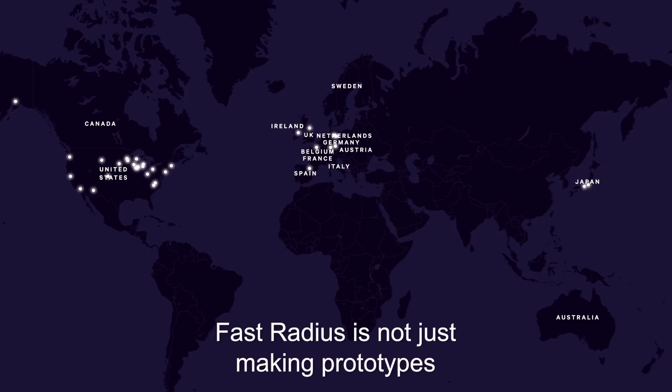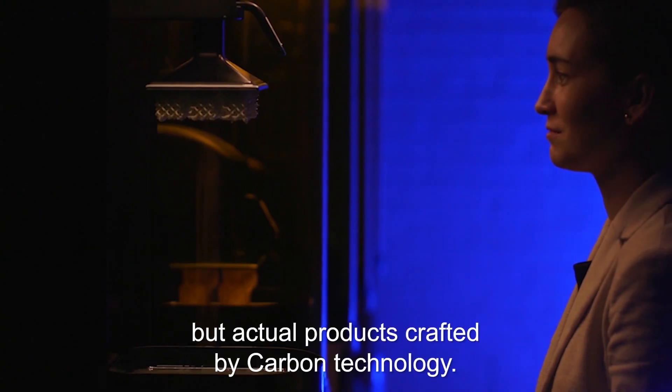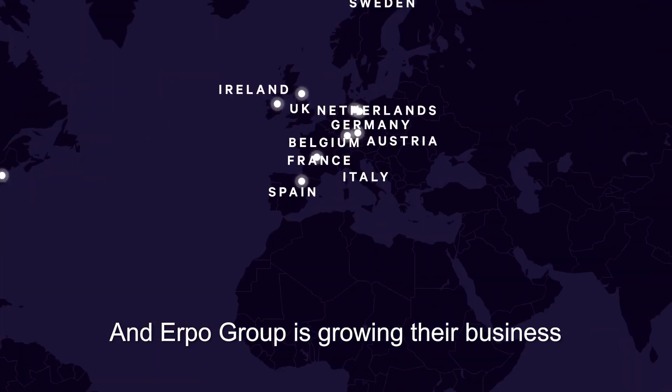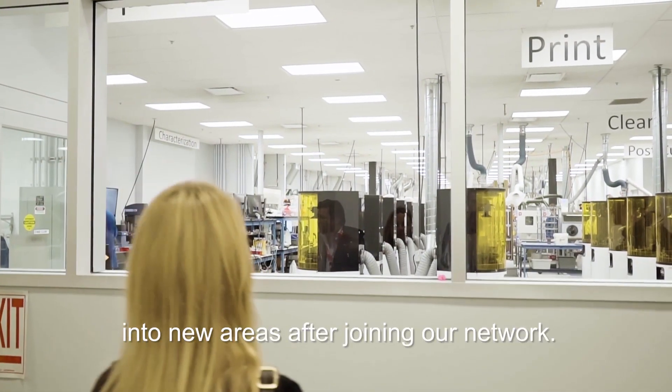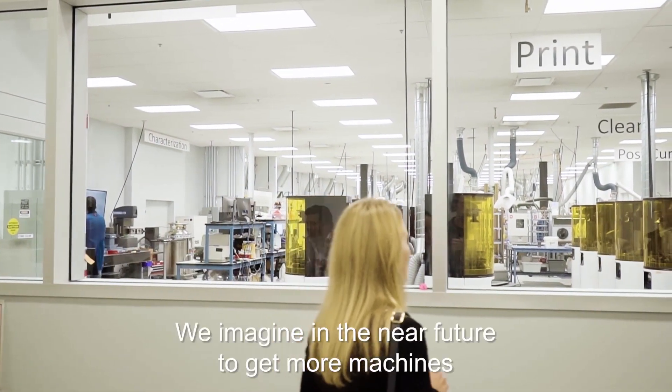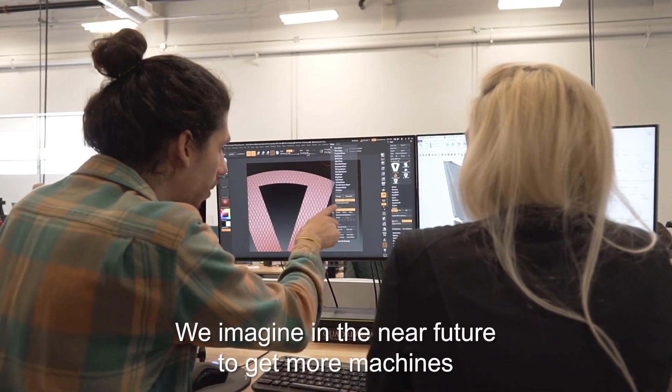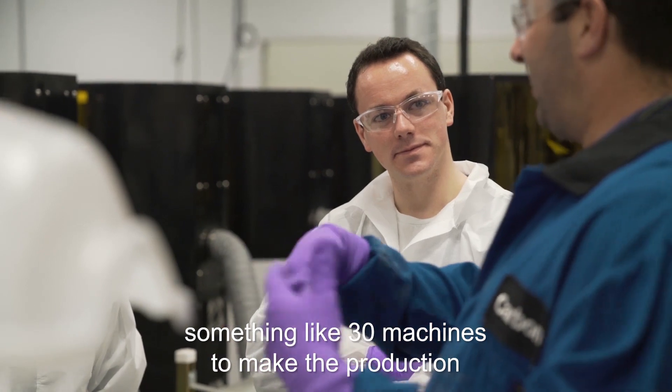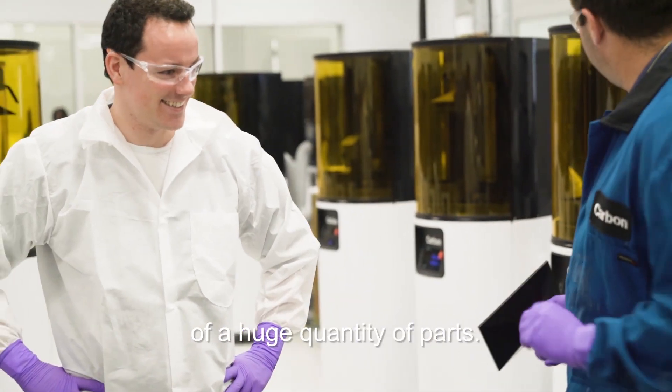MassRadius is not just making prototypes, but actual products crafted by Carbon technology. And AirPro Group is growing their business into new areas after joining our network. We imagine in the near future to get more machines and maybe in 2021 something like 30 machines to make the production of a huge quantity of parts.